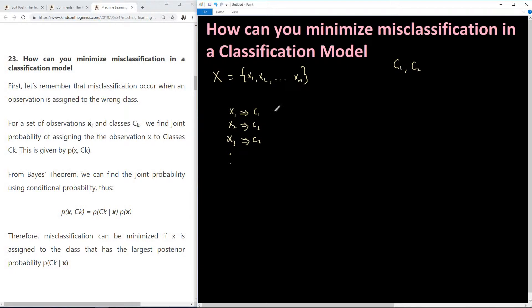For a set of observations x and classes Ck for k equal to 1 or 2, we find the joint probability of assigning the observation x to class Ck and this is given by the joint probability of x and Ck. So what we are going to do is find the joint probability of x and Ck.